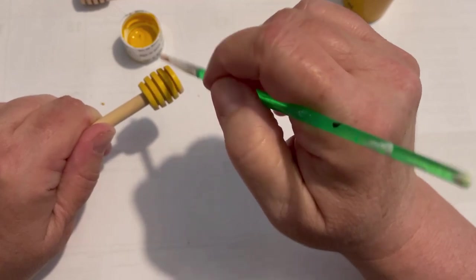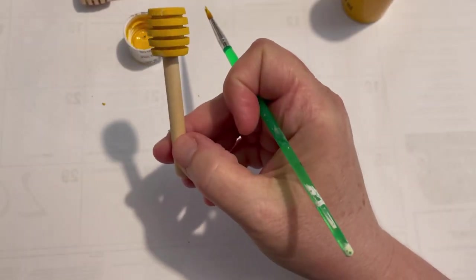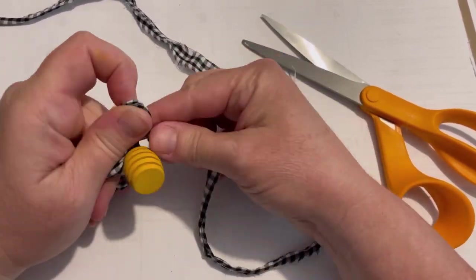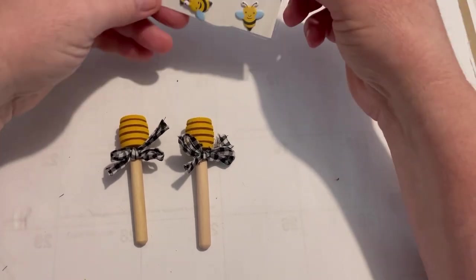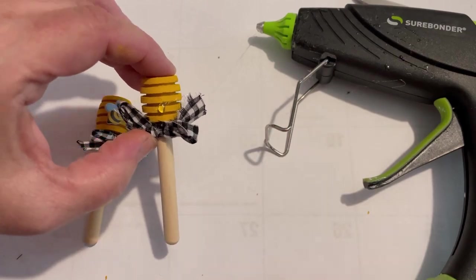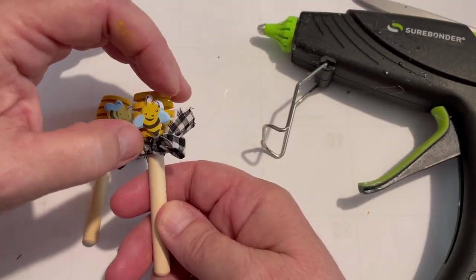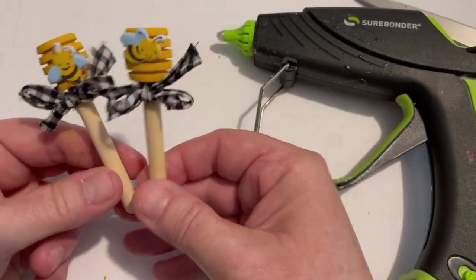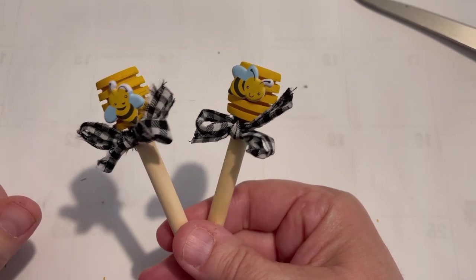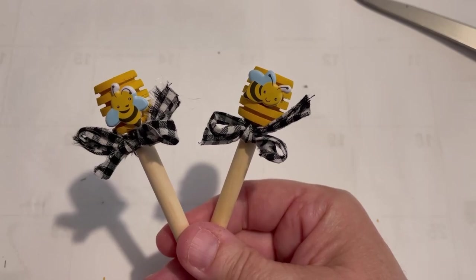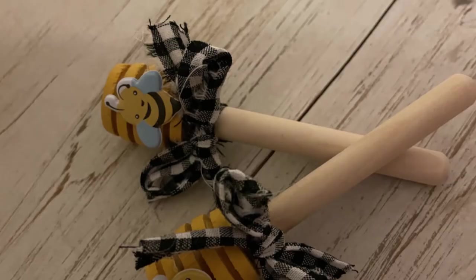Simply just paint that with that beautiful King's gold yellow. Let that dry and then put a little farmhouse ribbon on there. Put your bees on there again and you're good to go. Really cute, easy. These are fun things for your tiered tray. And there's those little cuties. And here we go.